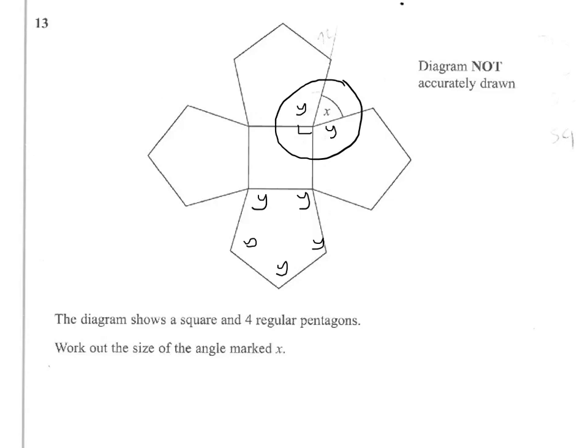Now the external angles of a regular pentagon, I'll put them in here, they make 360. And the internal angles are on the straight line with the external, so we can work them out that way.